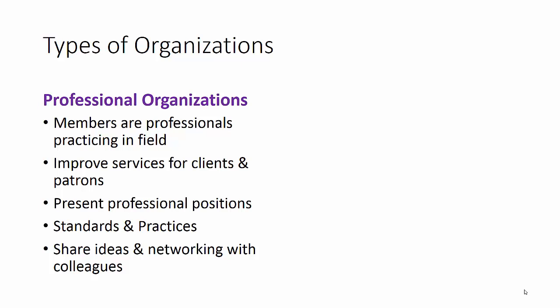There are two main types of organizations. Professional organizations are developed by members of a profession that are practicing in that field or discipline, and their cause is usually to improve their services and practices for their clients and patrons.